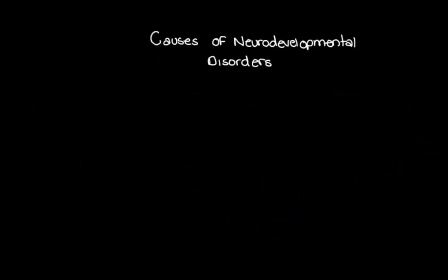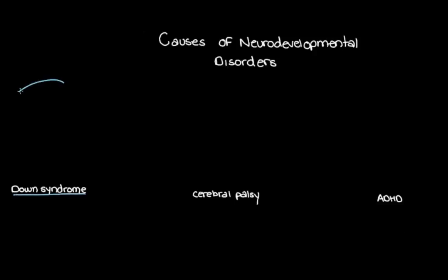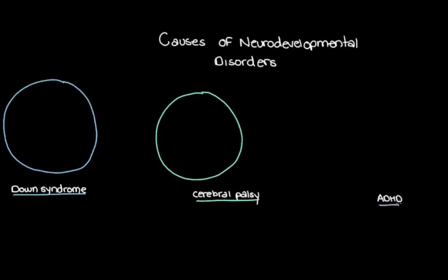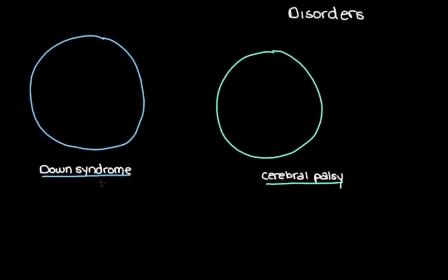Let's put down some specific neurodevelopmental disorders: Down syndrome, cerebral palsy, and attention deficit hyperactivity disorder — ADHD. We'll use these three disorders because each helps demonstrate a particular point. Let's draw a circle for each and put the causes inside — a causal pie chart. Down syndrome is caused by extra genetic material from chromosome 21, so let's put that in our Down syndrome circle.